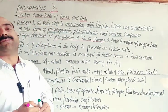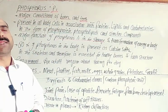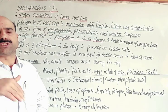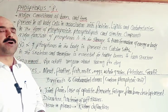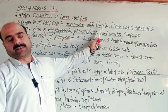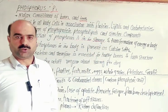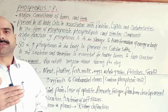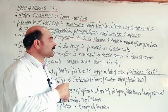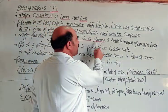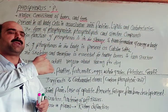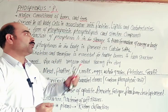Phosphorus is involved in the formation of different body parts in association with proteins, lipids, and carbohydrates in each and every cell of the body. Proteins are used for biosynthesis — forming muscles, nails, and other structures. Phosphorus is also involved in the storage and transformation of energy in the body.